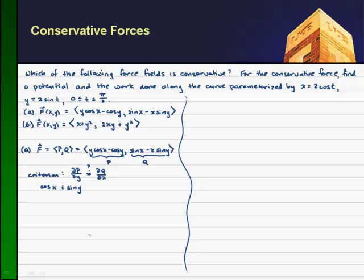And that, if it is conservative, should equal the partial of q with respect to x. And the partial of q with respect to x gives me cosine of x minus sine of y.